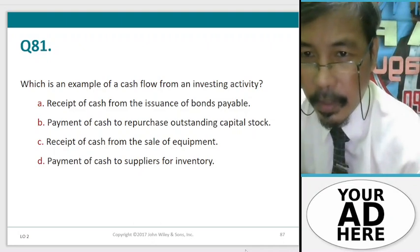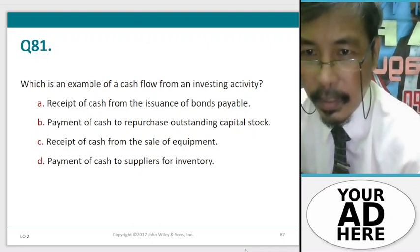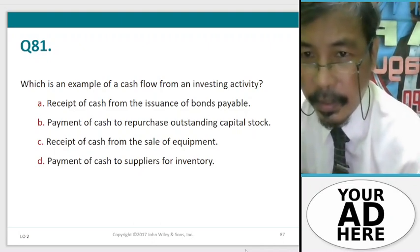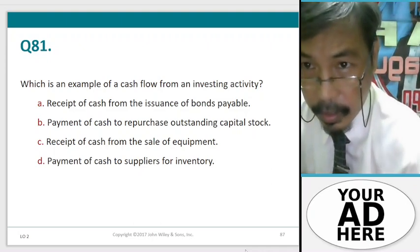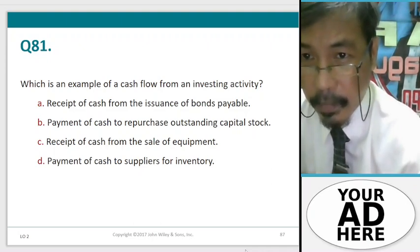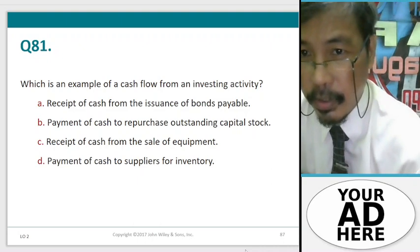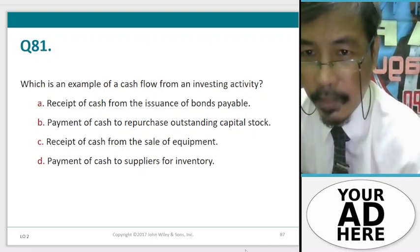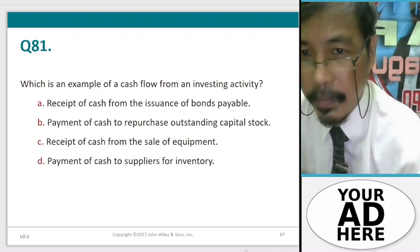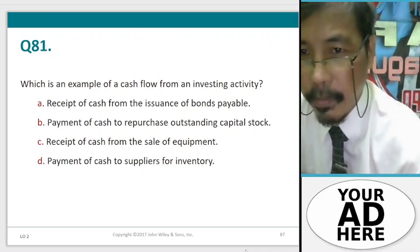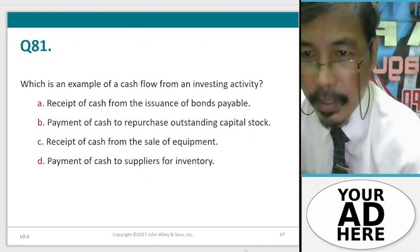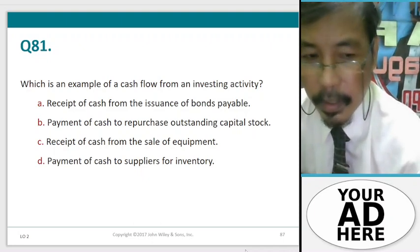Question 81. Which is an example of a cash flow from an investing activity? A. Payment of cash to repurchase outstanding capital stock, C. Receipt of cash from the sale of equipment, D. Payment of cash to suppliers for inventory.